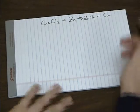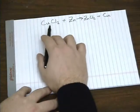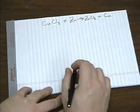Let's look at another example. This time, let's look at the reaction between copper 2 chloride and zinc to give us zinc chloride and copper.